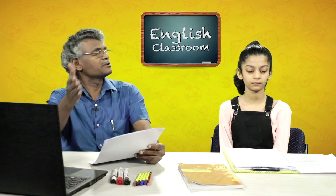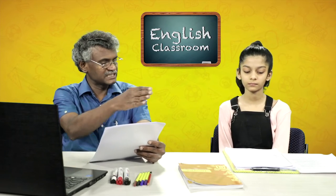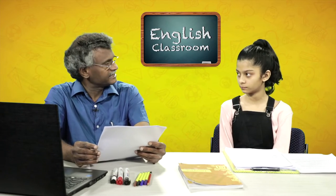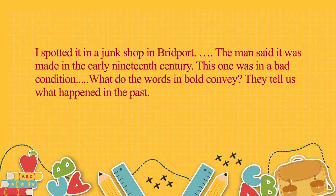The story has been narrated in past tense with many actions in the past. Now Devansi, we will notice some past tense and past perfect tense forms in the text. Look at this portion from the textbook: 'I spotted it in a junk shop in Britport, then the man said it was made in early 19th century and this one was in bad condition.' Look at the underlined words in bold. What are those words? Spotted, said, walked. What do these words convey? They say something about what happened in the past.